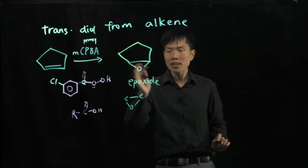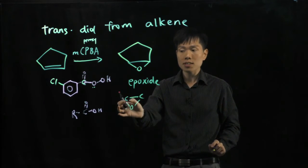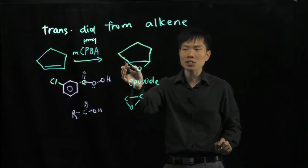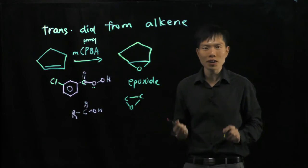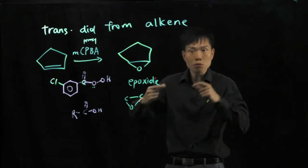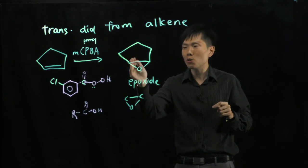And this is very unstable because of the angle strain that makes it 60 degrees. Normally for this sp3 hybridized carbon, it is supposed to take a bond angle of 109.5. But right now, there's no choice, it's being restricted, so that means this molecule is very reactive.